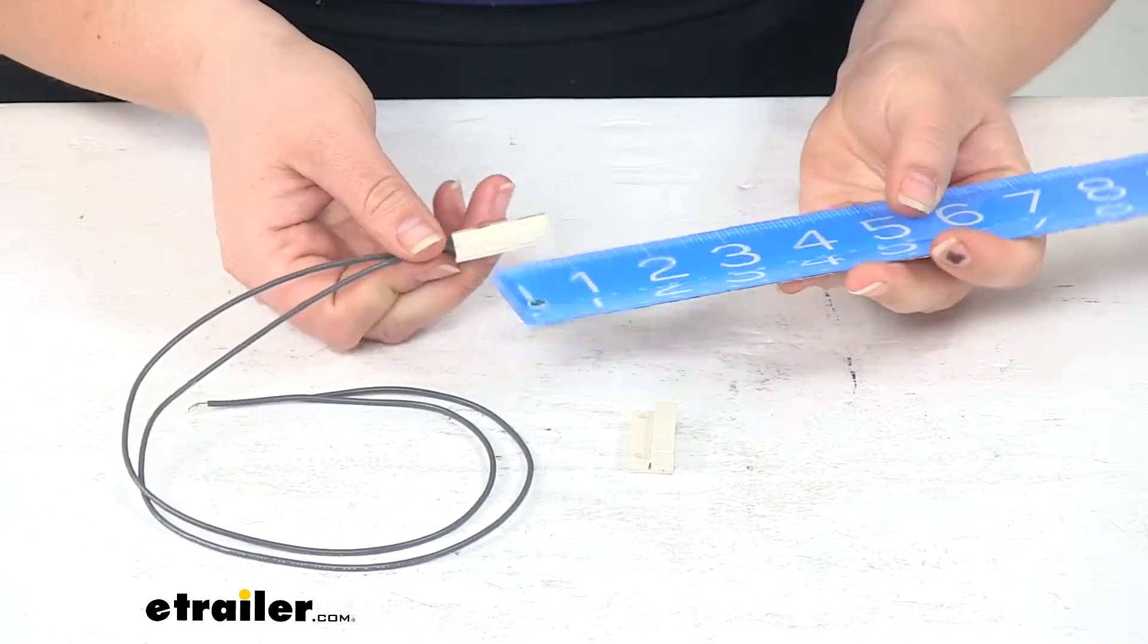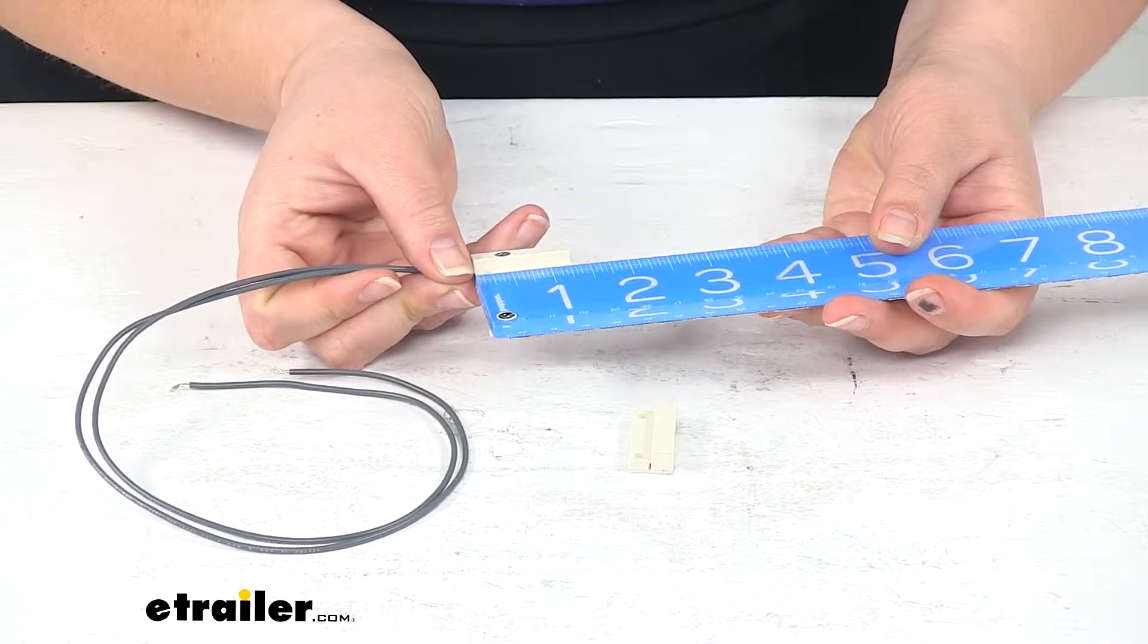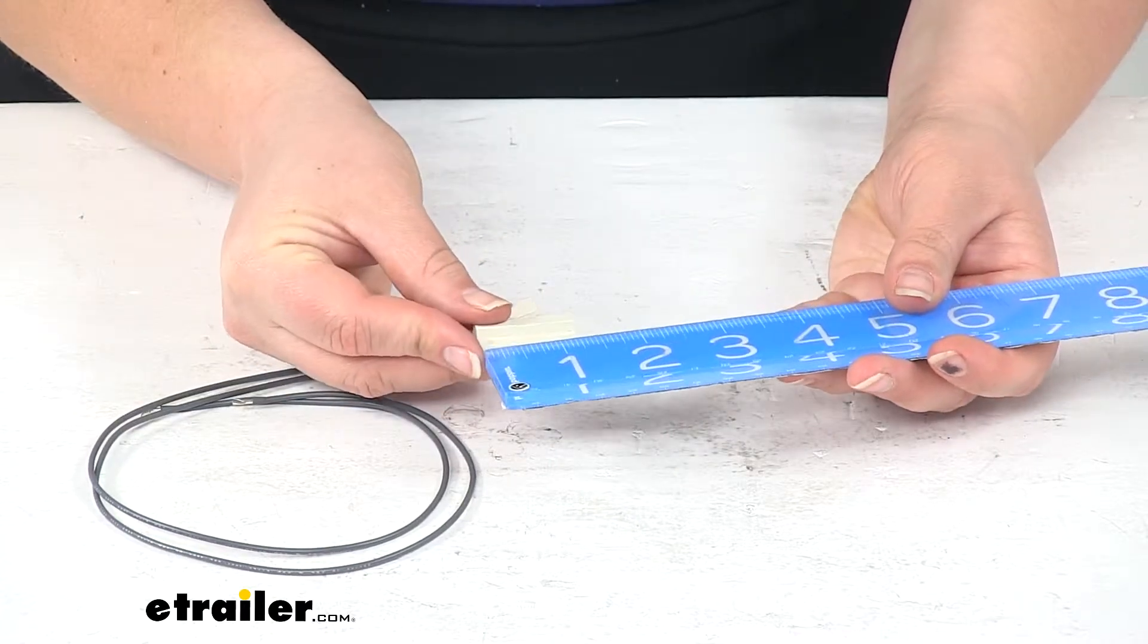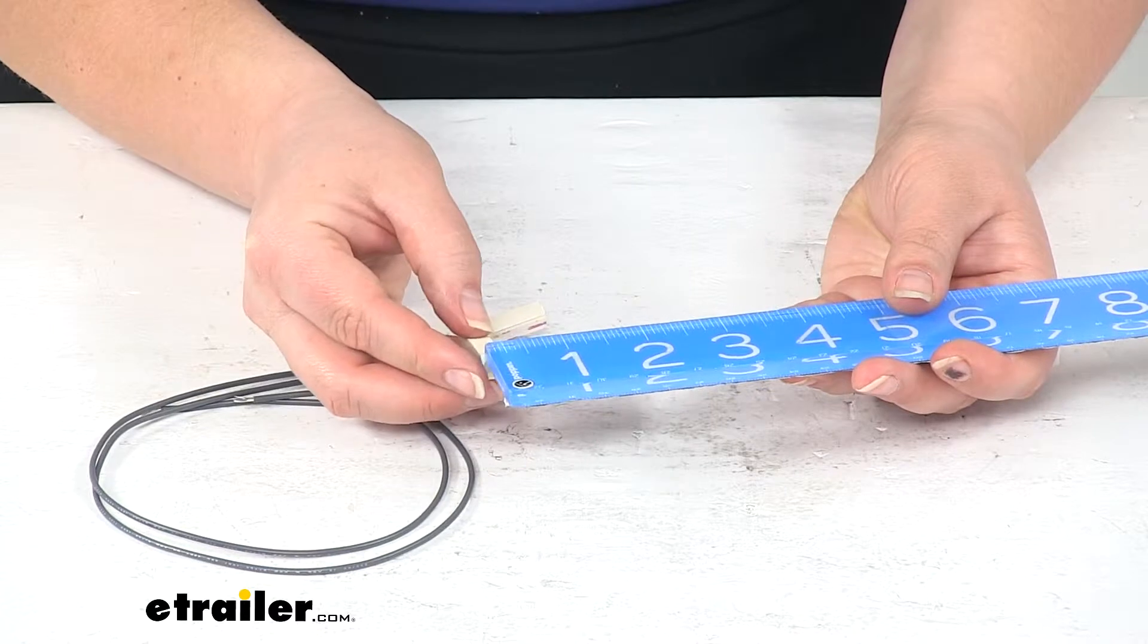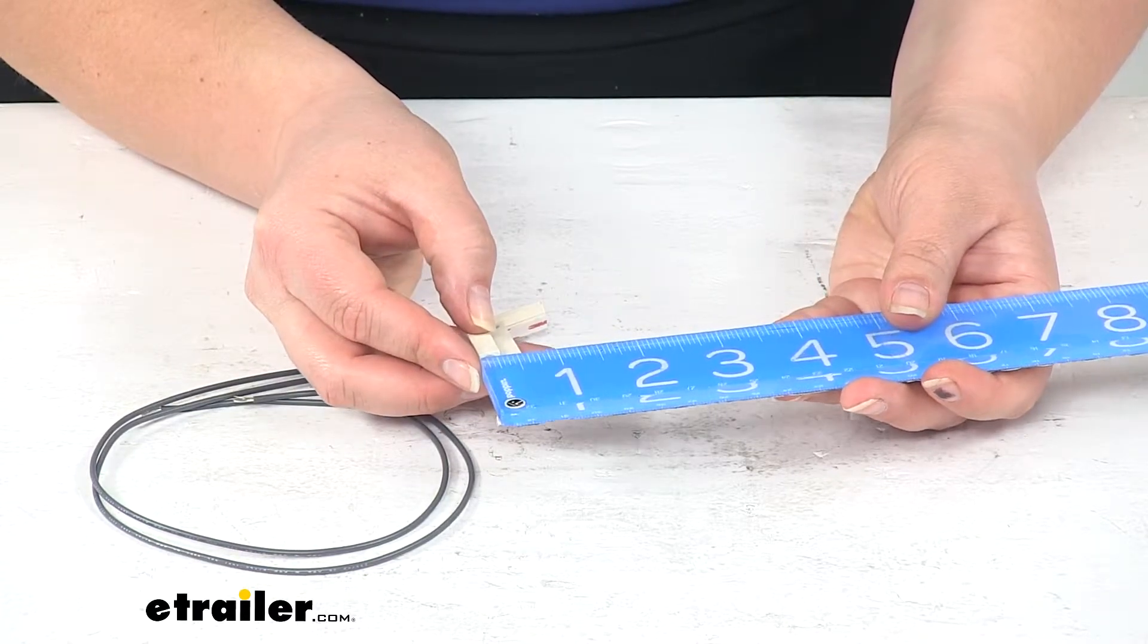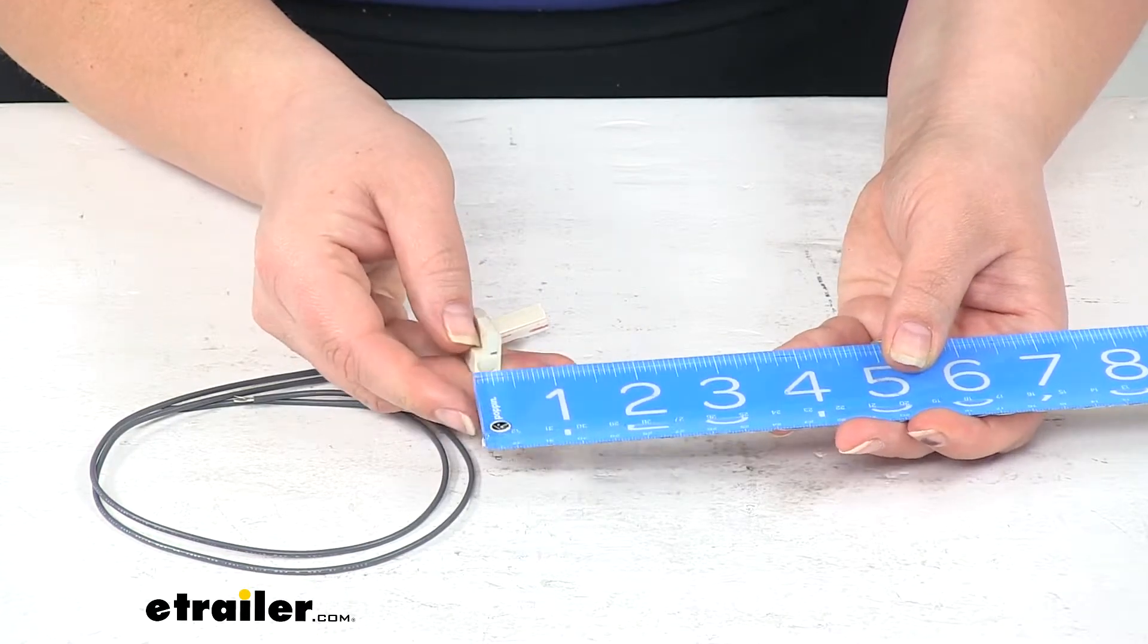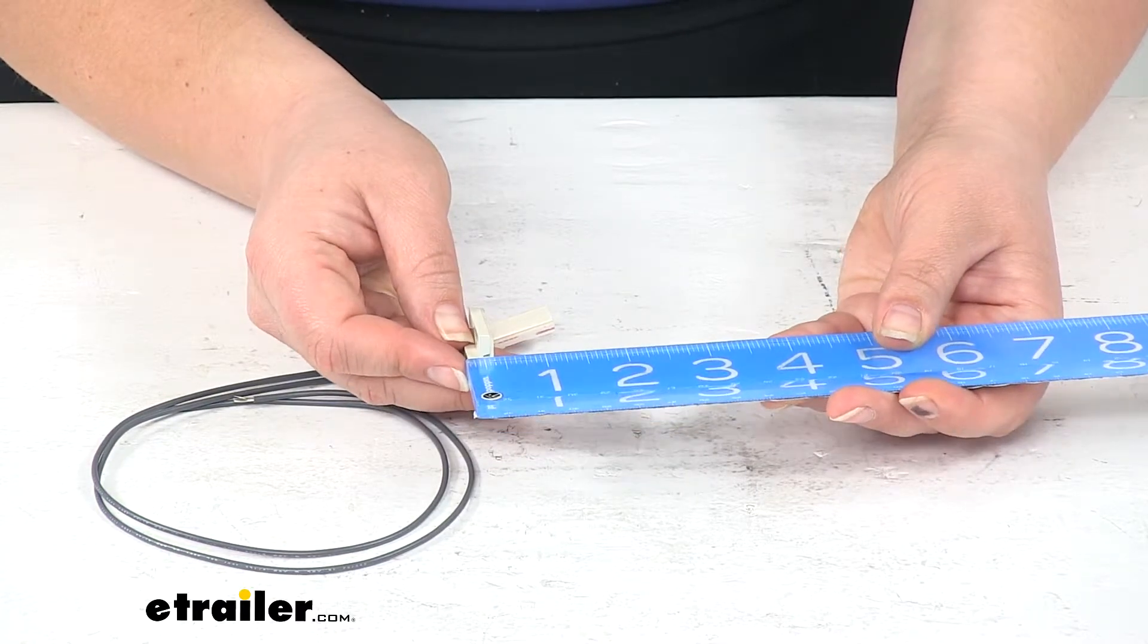And as far as the measurements, the sensor itself that goes on the inside is about an inch and a quarter long, and that should be the same for our door portion. Again, an inch and a quarter long by about 9/16ths of an inch wide, and then at the deepest point it's about 5/16ths.